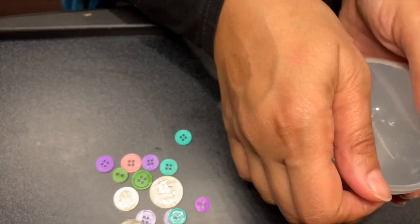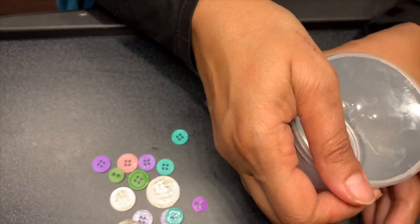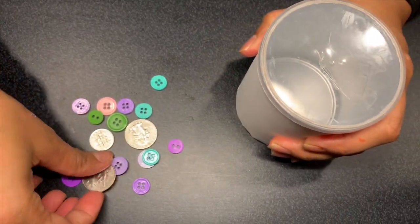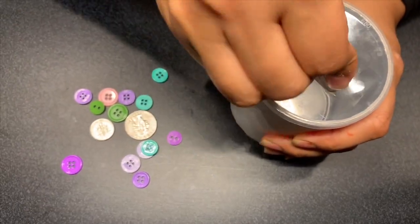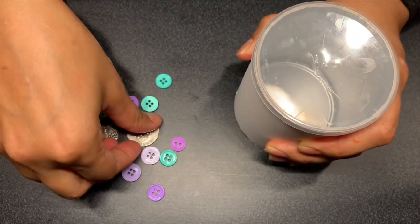Place the lid back onto your container. Hold the container with your non-dominant hand and pick up your objects and push them into your piggy bank.